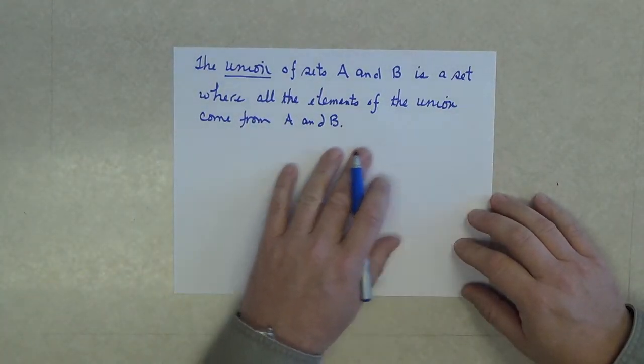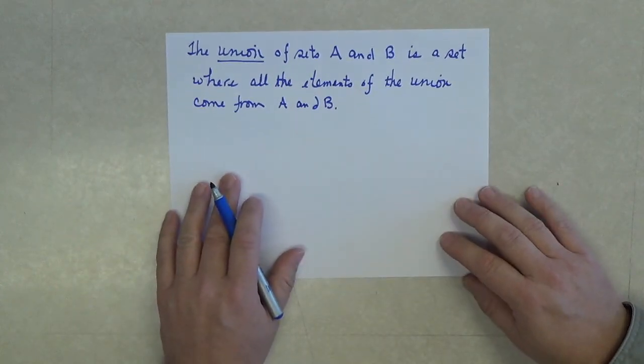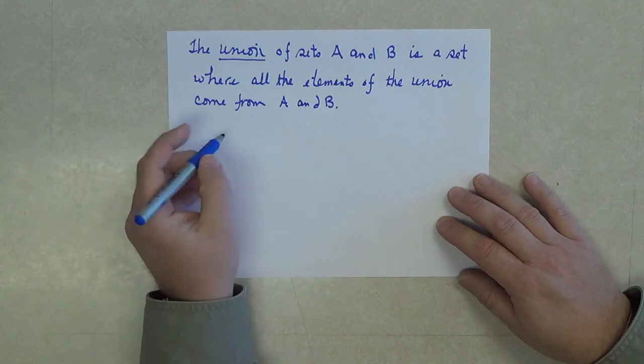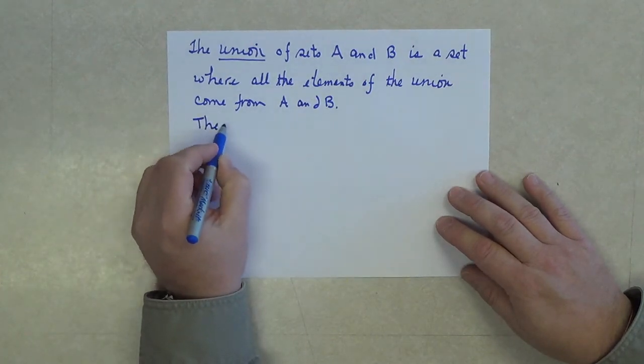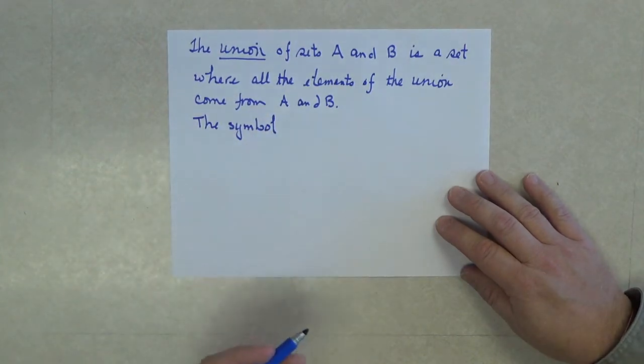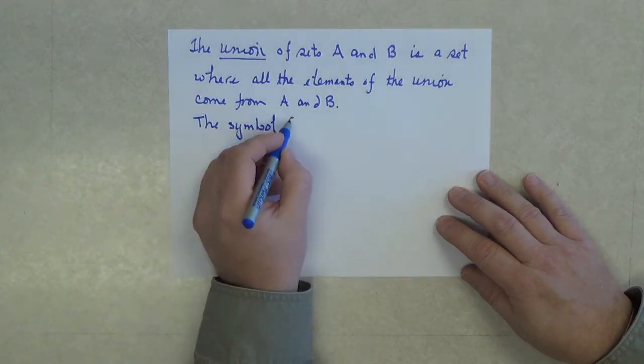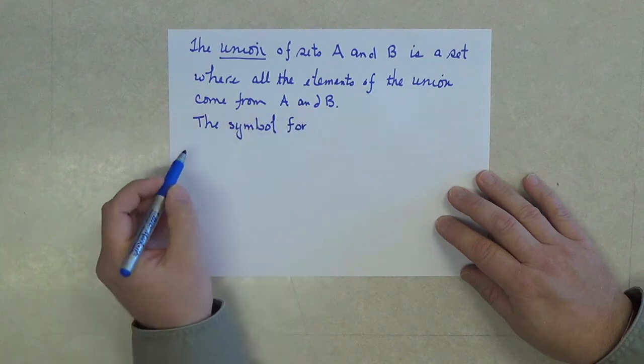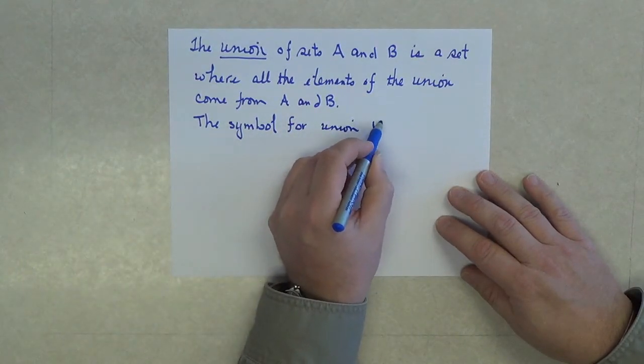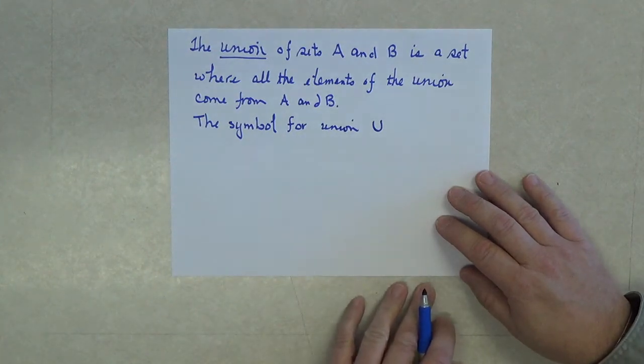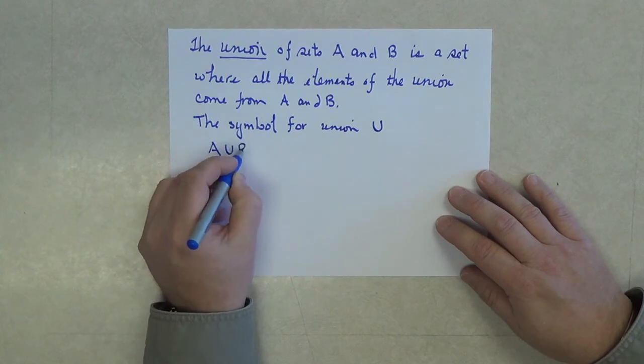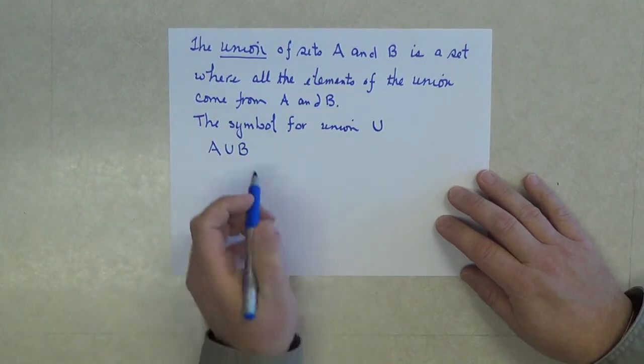I'm going to start trying to explain this in a very precise manner. The symbol for union, just like we have a symbol for multiplying or dividing, is a U but it doesn't have the downward tail on it. I would read the symbols here, A union B.